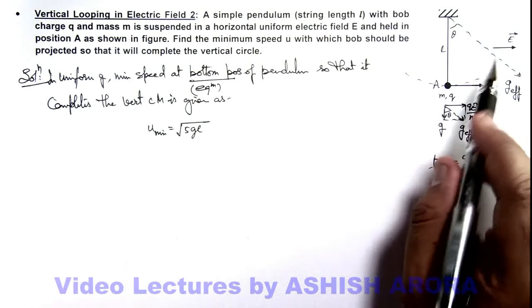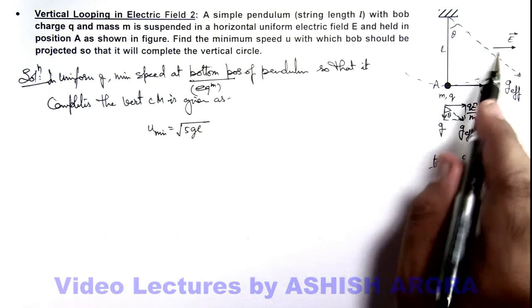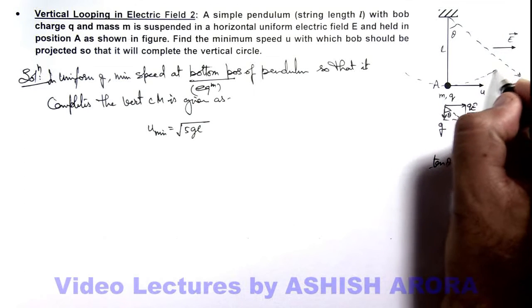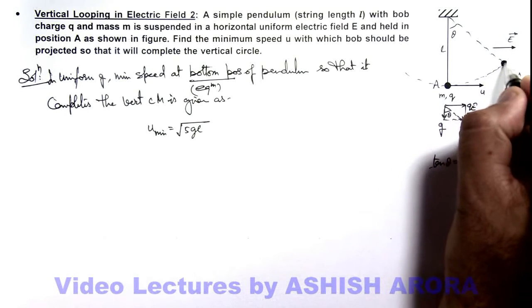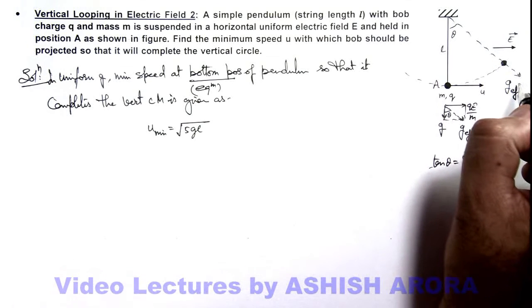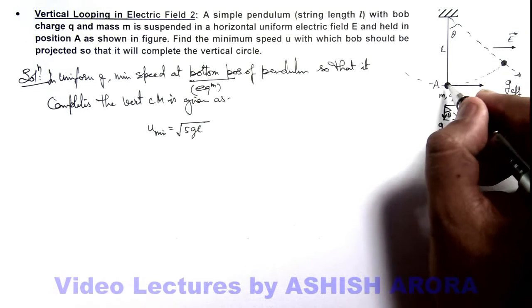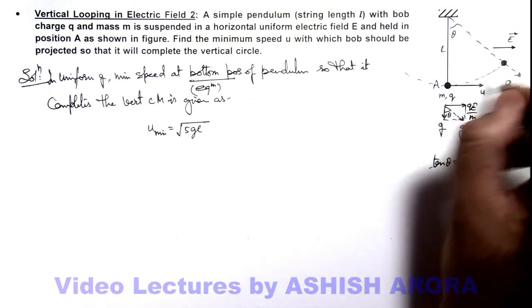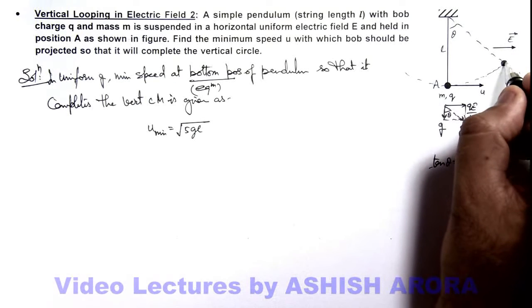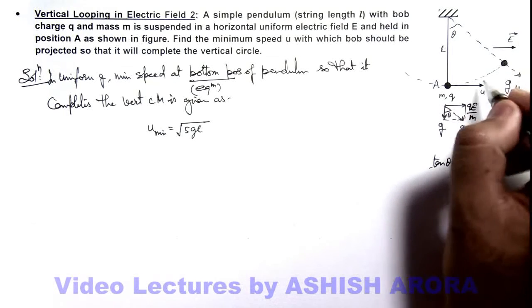So in case of presence of electric field, it changes its equilibrium position from this point to this point as this is the direction in which g effective is acting on it. So if we release the ball it'll oscillate about this equilibrium position and finally it'll come to rest at this point if the oscillations are done.